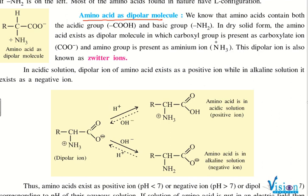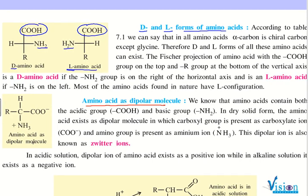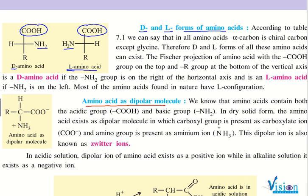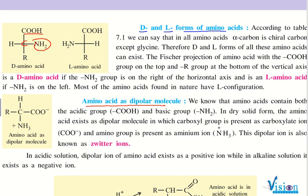What is a dipolar molecule? In one of these structures, when the alpha carbon has both amino and carboxyl groups nearby, the H+ from the carboxyl group migrates to the NH2 group, because the carboxyl is an acid and has a tendency to release H+, while the base has a tendency to accept H+ due to its lone pair of electrons.